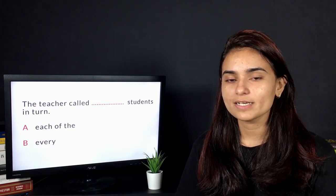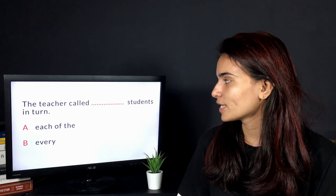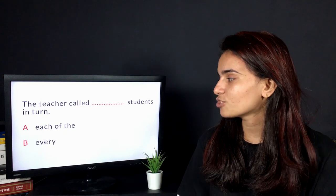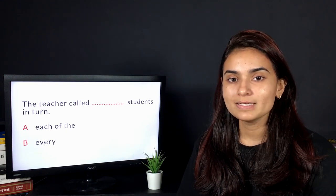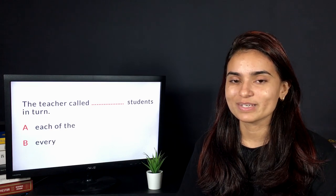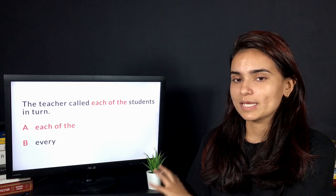In continuation, we have question number three: The teacher called dash students in turn. This is a tricky one used in most cases. Option number one is 'each of the,' option number two is 'every.' Take a moment and think of the answer. The correct answer is 'the teacher called each of the students in turn.'